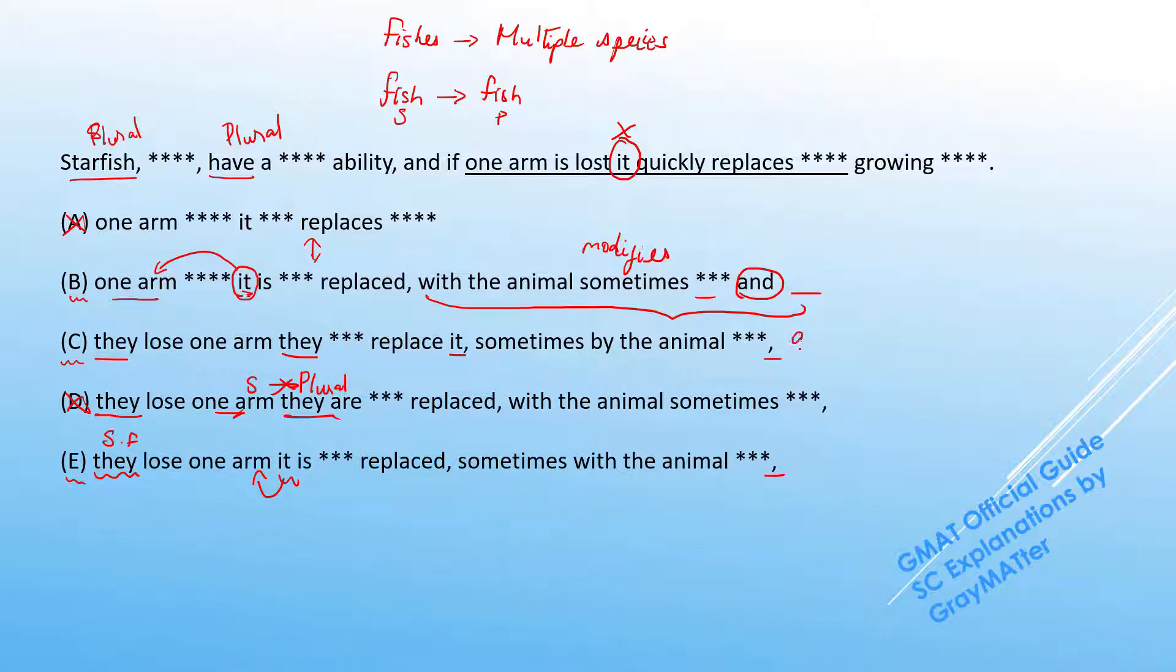But in C, we have this growing an extra arm or two is actually put in the present participle modifier form. Now, present participle forms placed after commas at the end of clauses usually end up modifying the clause in front of it. But if you look at this, sometimes by the animal overcompensating, this is not a clause construction at all. This is actually a modifier construction placed in between commas. So the growing one or two cannot act as a modifier for sometimes by the animal overcompensating.